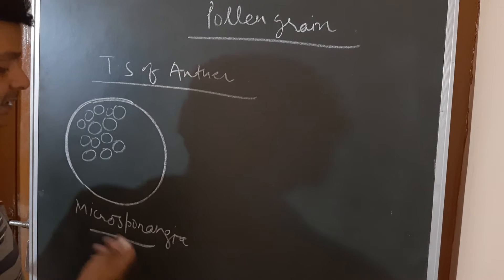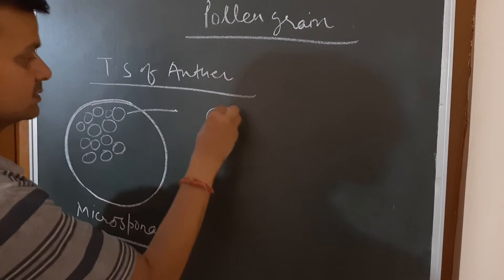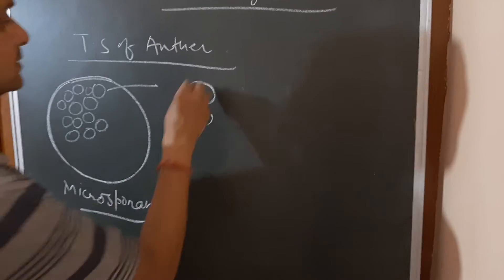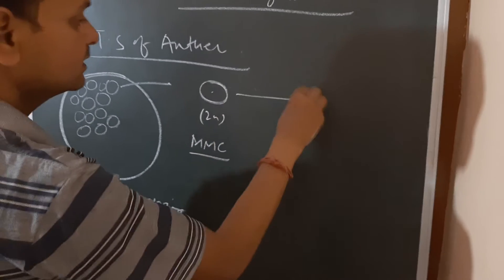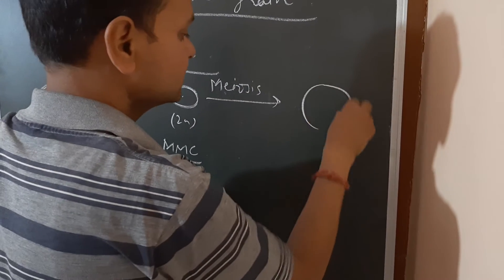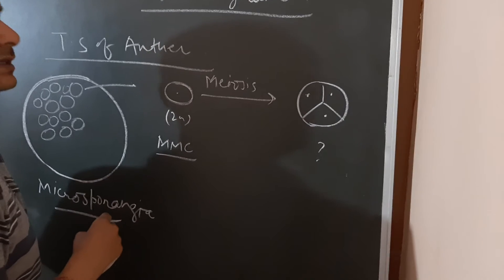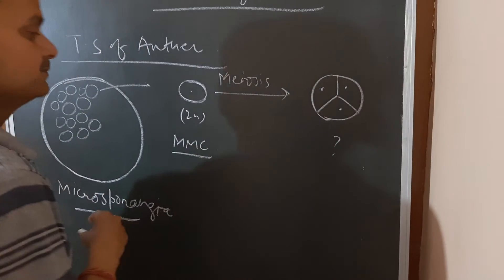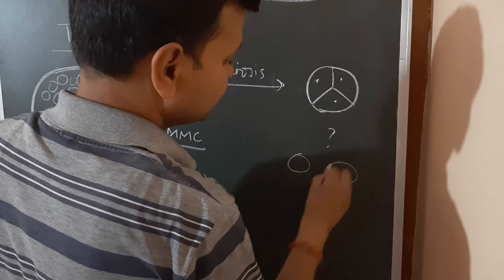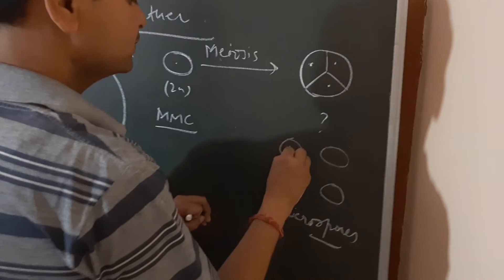Now as the anther develops, the sporogenous tissue becomes loosely arranged. This is a diploid cell and it is also called as MMC or the microspore mother cell, and it will go under reductional division meiosis. This will result into the formation of a tetrad, which is called the tetrahedral structure. Afterwards the four cells will get separated and they will form four microspores. These microspores are haploid structures.